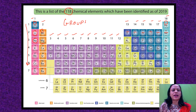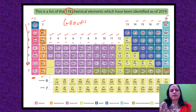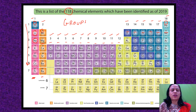The first group is shown in pink, the second group in orange. Then there are 10 groups in purple — group numbers 3 through 12. Followed by the remaining 6 columns. So in all there are 18 vertical columns, which are known as groups.